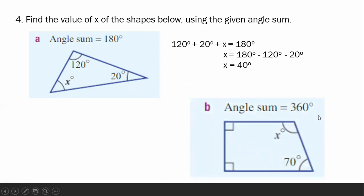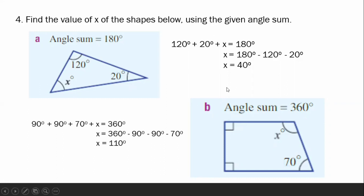Letter B: the angle sum here is 360. As you can see, the two given angles are right angles, so each measures 90 degrees. The value of X is 110 degrees. I hope you learned something and refreshed your minds.